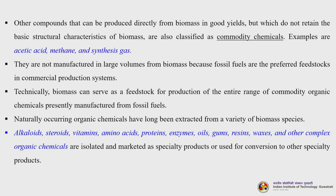Other compounds such as acetic acid, methane and synthesis gas are not manufactured in large volume from biomass because fossil fuels are the preferred feedstocks in commercial production systems. But as fossil fuel is depleting, there is a need to look for alternate routes for producing even commodity chemicals. Technically, biomass can serve as a feedstock for production of the entire range of commodity organic chemicals presently manufactured from fossil fuels.